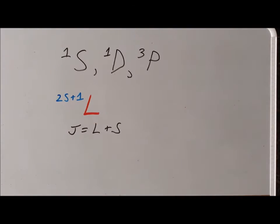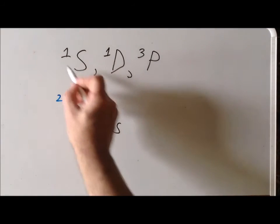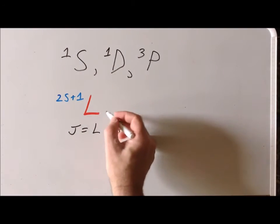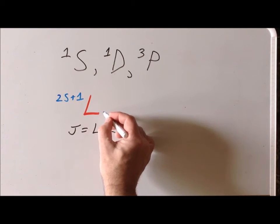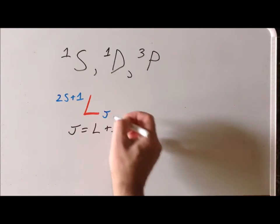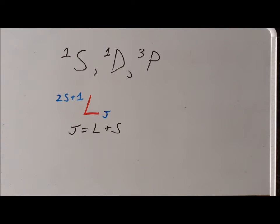Let's see if we can derive the J values for the terms we have here, because once we have that, we put the value of J as a subscript down to the right. It's the final step of writing a complete term symbol.